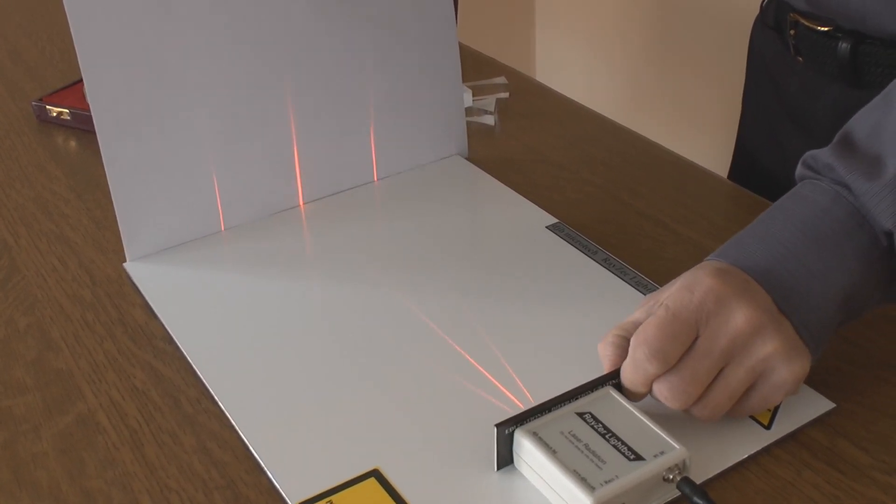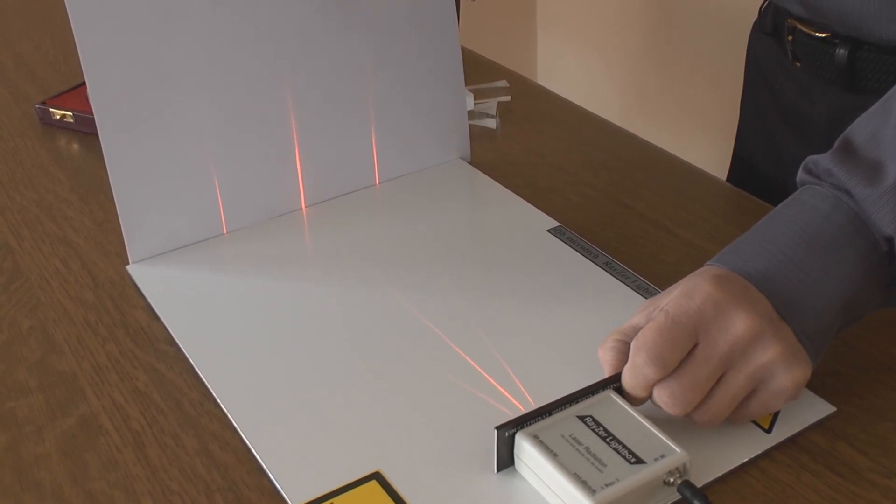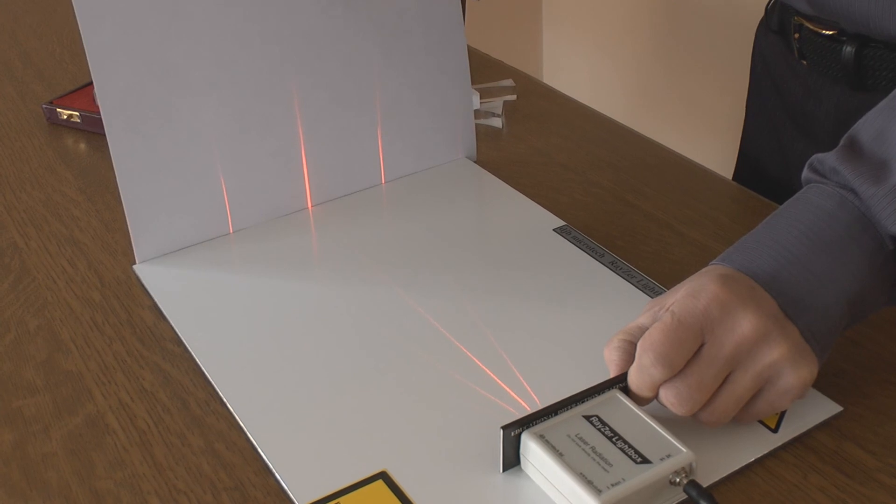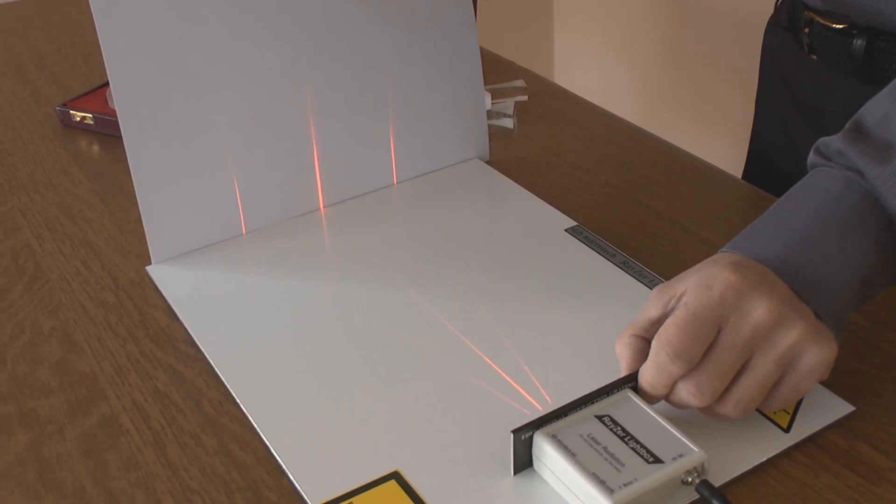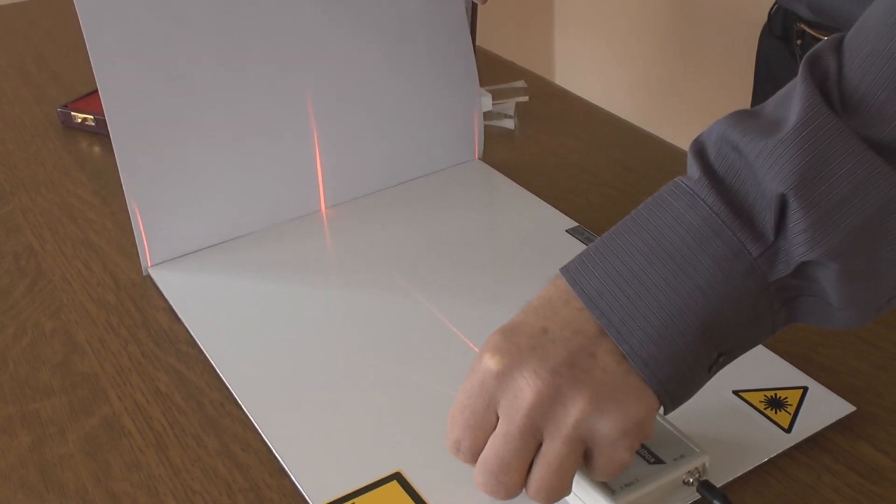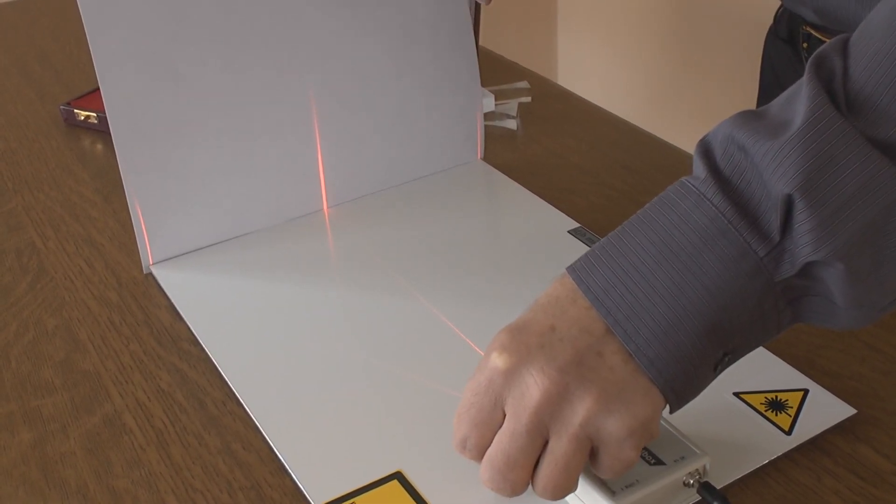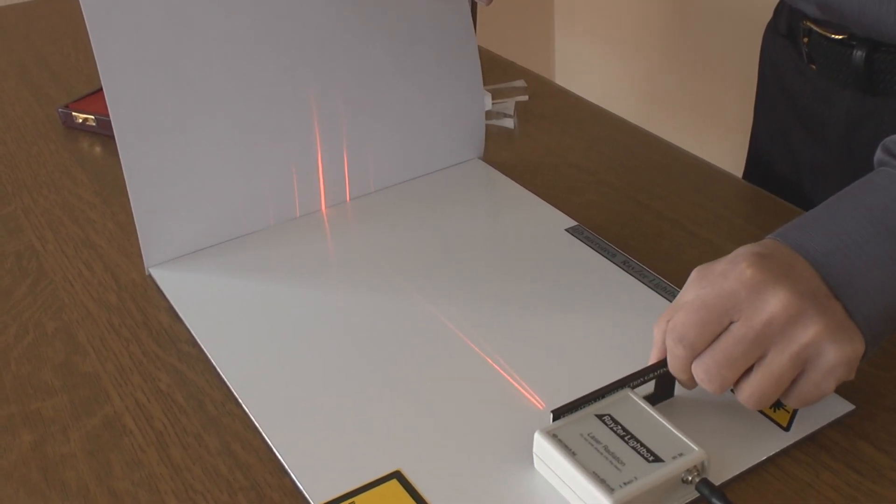If I slide that along until we get to 300 lines per millimeter, you can see that the fringes are now further apart. And I think if we go to 600 it would be so far apart it's off the card. Oh just on the card. So we can measure our wavelength of laser light.